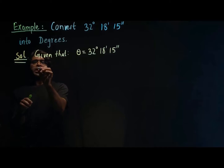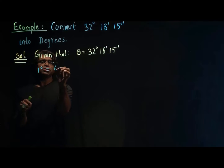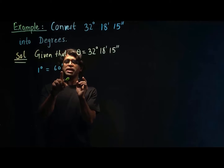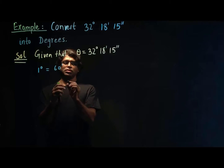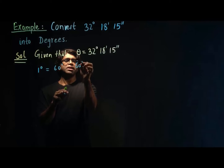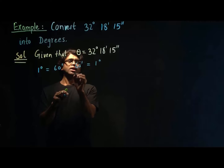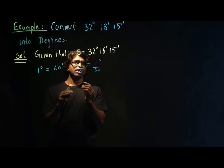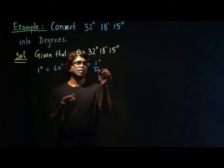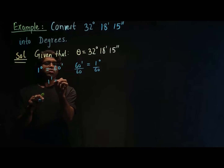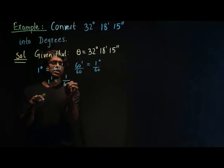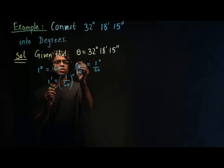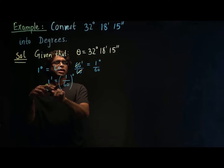We already know one degree is equal to 60 minutes. If I want to find the value of one minute in terms of degrees, I will write 60 minutes is equal to one degree, and then I will divide both sides by 60. This gives me one minute is equal to one over 60 degrees, because 60 over 60 is one.